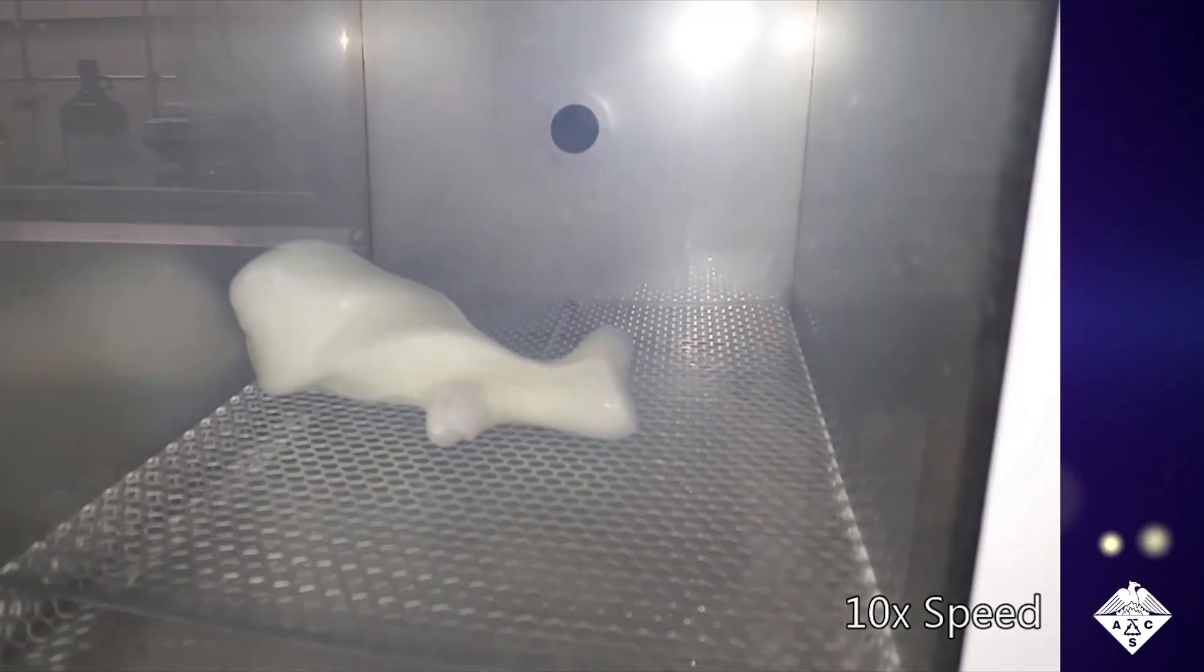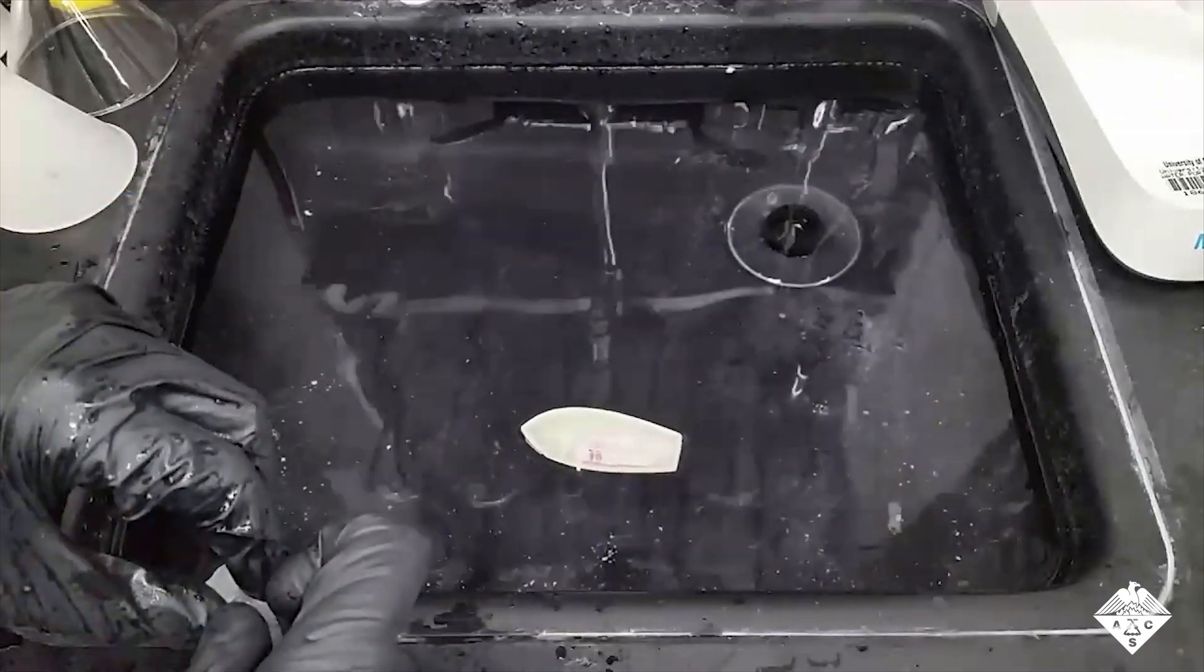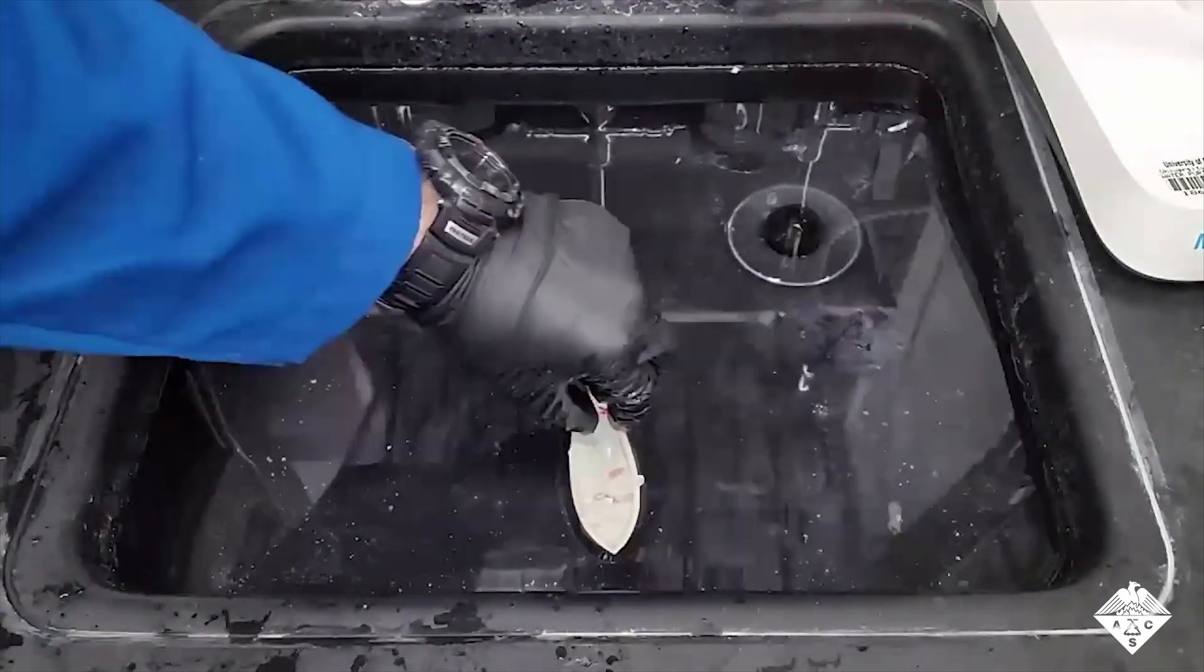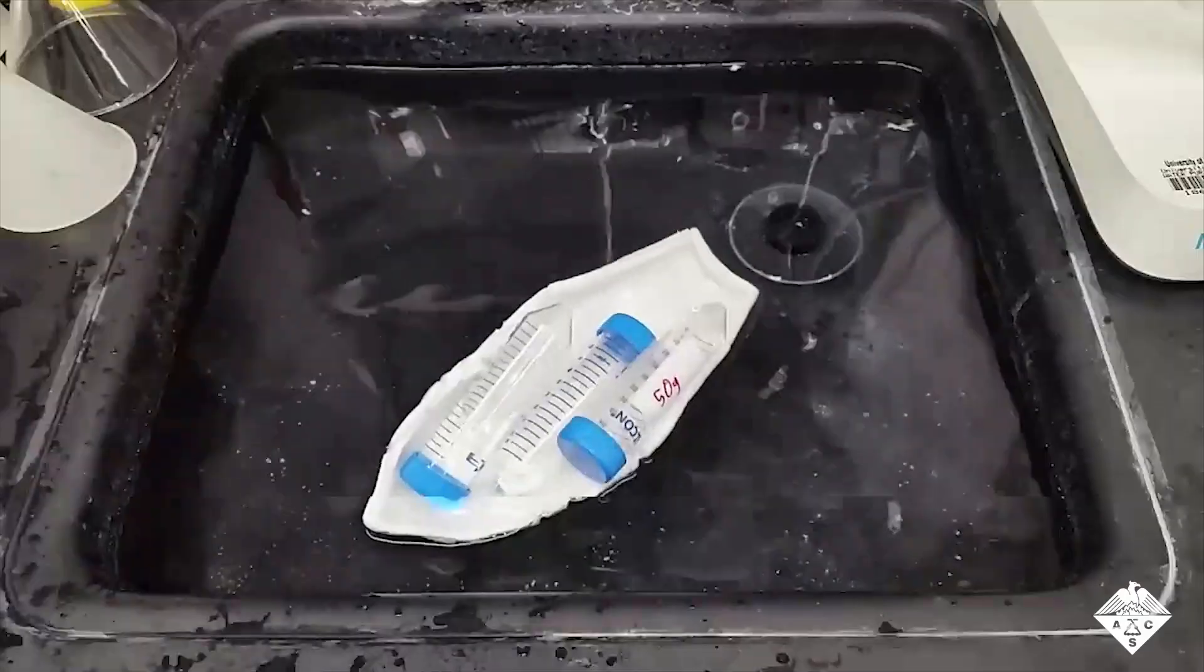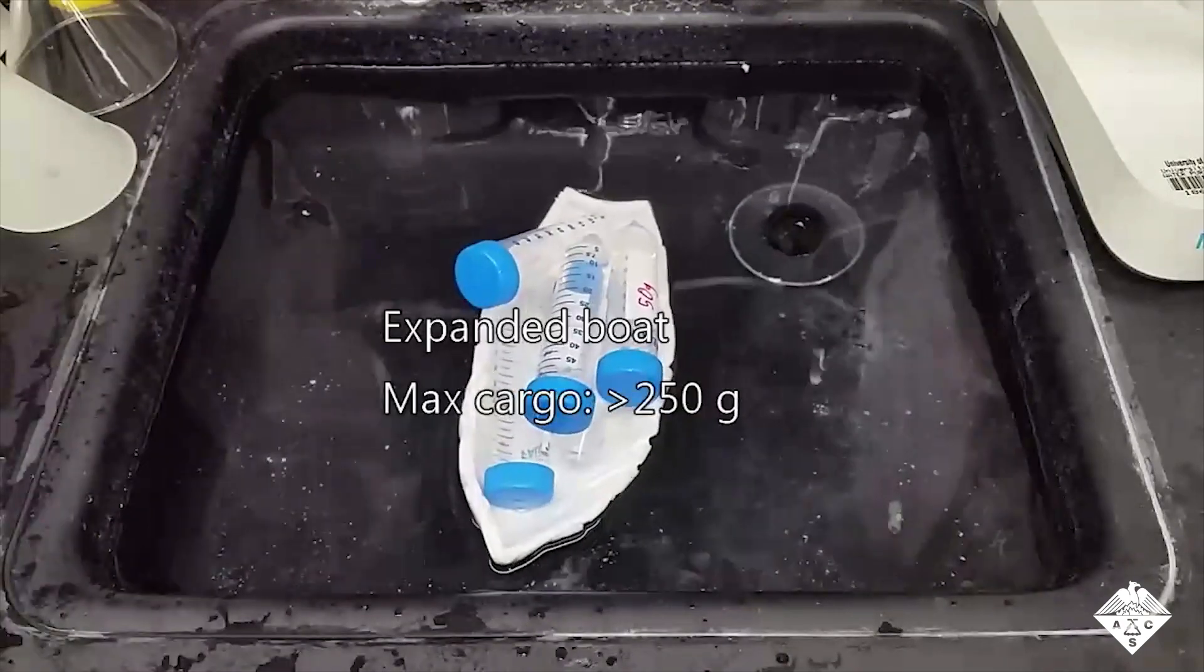With this method, the team also 3D printed other shapes such as a boat. The original 3D printed boat could only carry a maximum cargo of 10 grams. But the expanded boat carried up to 250 grams, or more than 25 times as much weight.